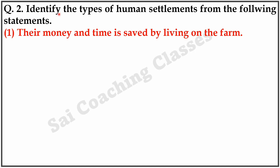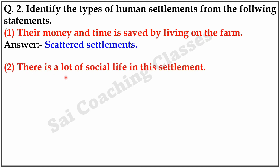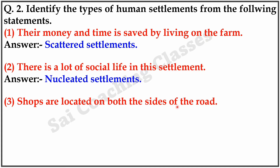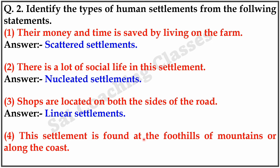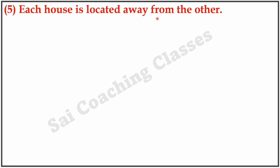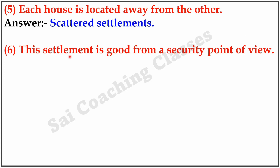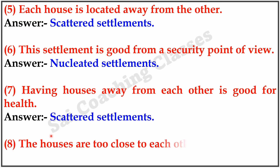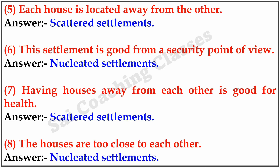Question 2. Identify the type of human settlement from the following descriptions. Their money and time is saved by living on the farm — Answer: Scattered settlement. There is a lot of social life in this settlement — Answer: Nucleated settlement. Shops are located on both sides of the road — Answer: Linear settlement. This settlement is found at the foothills of a mountain or along the coast — Answer: Linear settlement. Each house is located away from the other — Answer: Scattered settlement. This settlement is good from a security point of view — Answer: Nucleated settlement. Having houses away from each other is good for health — Answer: Scattered settlement. The houses are too close to each other — Answer: Nucleated settlement.